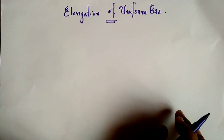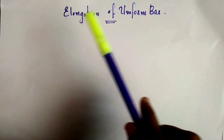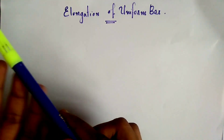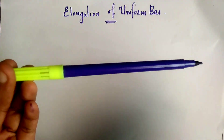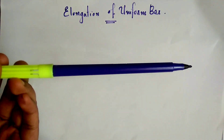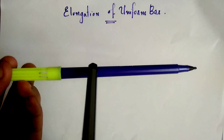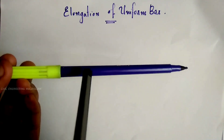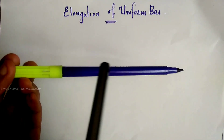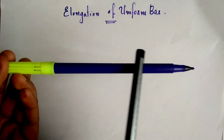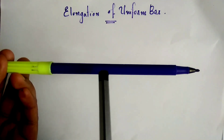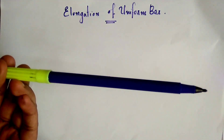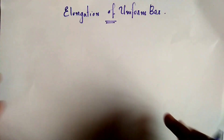Hi Friends, welcome to Civil Engineering Mara. Today we are going to cover the topic of elongation of a uniform bar. We will work through this example — we assume this uniform bar with a load applied to it. This bar has a length, and a cross-sectional area of intersection.